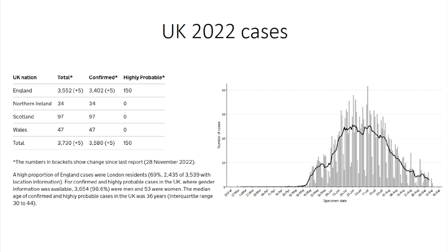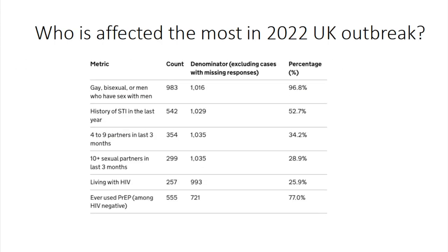In terms of 2022 cases, we peaked in the summer and then everything came down. We've had just under 4,000 total cases; the vast majority have been managed in the community and have been mild. As I said, gay and bisexual men have been mostly affected. If you dig into those data, often these are quite sexually active people who often have multiple partners — quite a high proportion living with HIV, but not necessarily immunosuppressed, typically well-controlled on their HIV treatment — and a high incidence of HIV pre-exposure prophylaxis use as well.